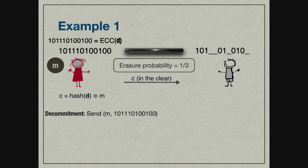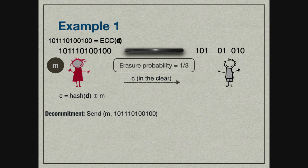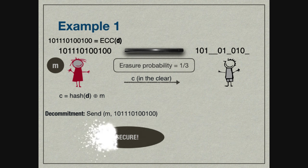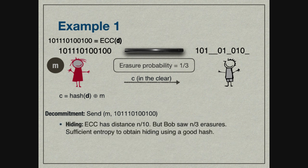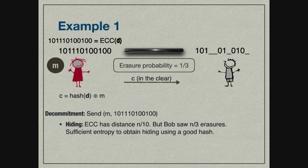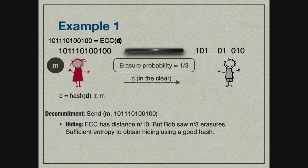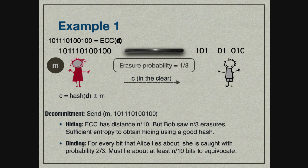During decommitment, Alice reveals both her message and this sequence of bits to the receiver. This is already a secure protocol. We choose an error-correcting code with minimum distance n over 10. Bob got n over 3 erasures, where n is the total number of bits proportional to some security parameter. There is no way it can cover up all the erasures Bob got. We can show there is sufficient entropy in Bob's view about what Alice sent, so that using a good hash, this entropy can be extracted and we get statistical hiding.